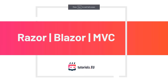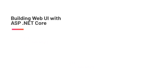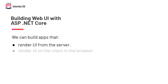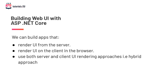Before we head into the gist of the course, let's have a high-level understanding of when and why we use the different templates — because Razor, Blazor, MVC are basically just templates in Visual Studio. There are three approaches to building modern web UIs with ASP.NET Core: we can build applications that render UI from the server, those that render UI on the client in the browser, or those that use both techniques. Each approach has pros and cons.